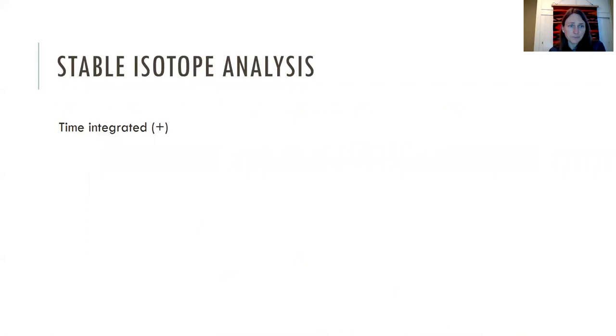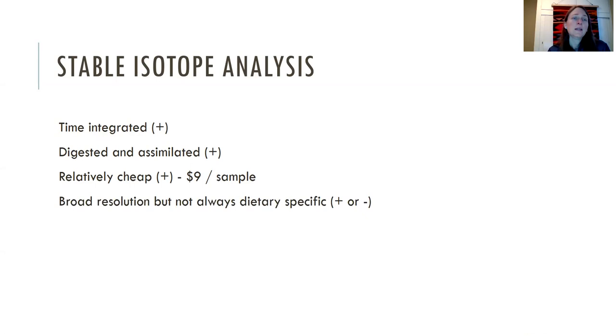Stable isotope analysis is really cool because it's time-integrated. So like I said, you know, like different types of tissue—like your hair, you can measure through time, but things like your blood is much faster, or muscle tissue would integrate over a much longer period of time. So depending on what tissue you select, you might be analyzing different time periods. It's getting at what's both digested and assimilated. It can be relatively inexpensive for scientific analyses—nine dollars a sample is pretty inexpensive. It might sound expensive to non-scientists, but it gives really broad resolution, which can be good but can also be bad.